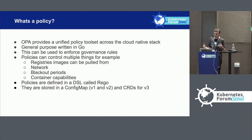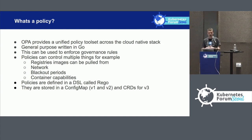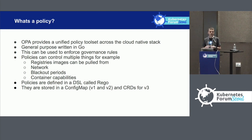Policies can control multiple things: where things are pulled from in registries, network settings, blackout periods, container capabilities — basically anything in your resource definition, like your deployment YAML. The policies themselves are defined in what's called Rego. They're stored generally in config maps, and there are some CRDs, or custom resource definitions, in V3. We'll talk a little bit about the difference between V1, V2, and V3.